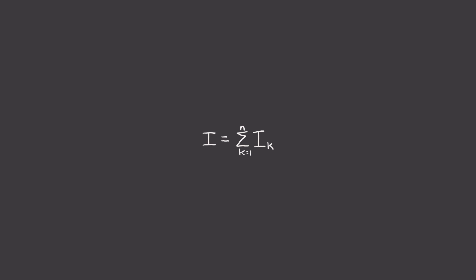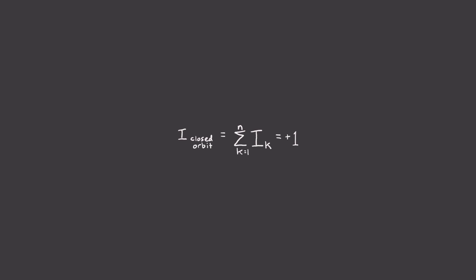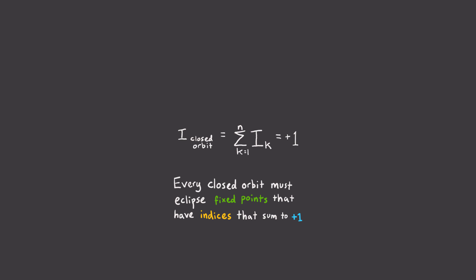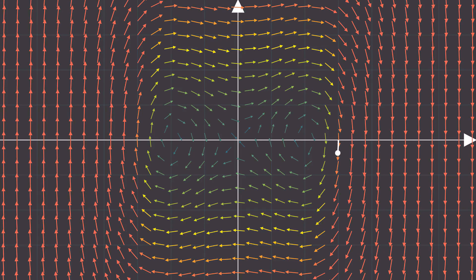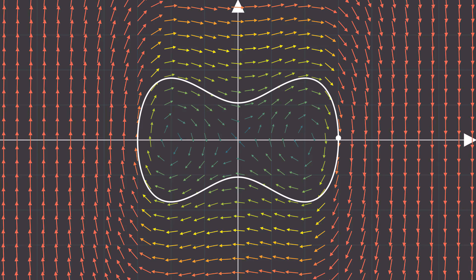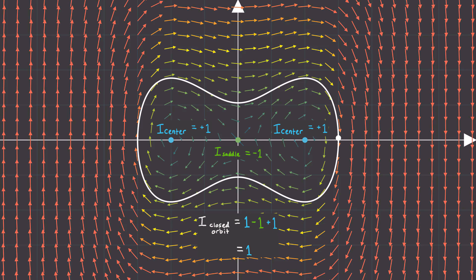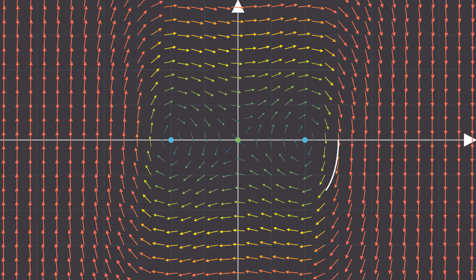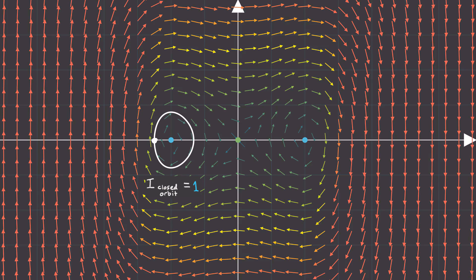Now we have all the ingredients we need to learn about closed orbits. We showed earlier that the index of any closed orbit must be plus one. Putting these two bits of information together, we can say for sure that every closed orbit must have fixed points inside of it whose indices all sum to plus one. You can see that in this example — this periodic solution surrounds three fixed points: a center (plus one), a saddle (minus one), and a center (plus one). One minus one plus one equals one. It works. We can also see numerically that closed orbits exist here and here, and the net sum for each of those curves is also plus one.